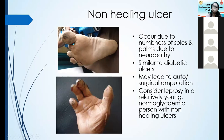Non-healing ulcers and trophic changes — she has lost her finger long ago and you can see ulcers, trophic changes, and auto-amputation of the second toe. These occur due to numbness of the palms and soles due to peripheral neuropathy, similar to diabetic ulcers. Especially if it is a relatively young person whose blood sugar is normal, think of leprosy.